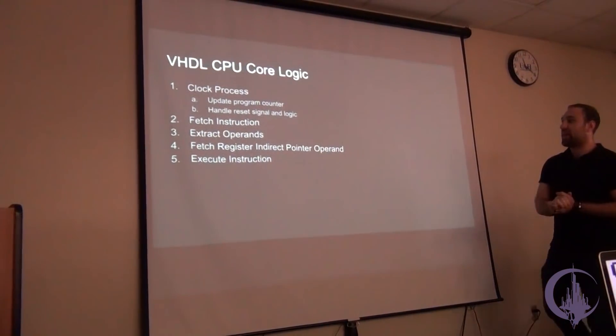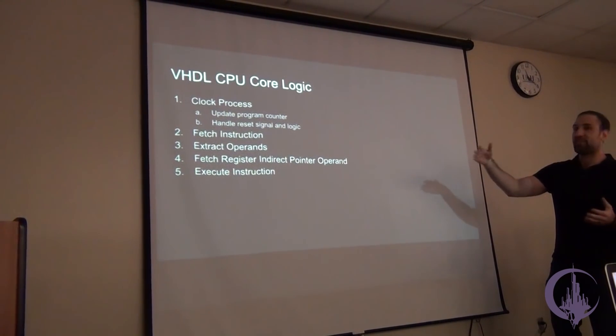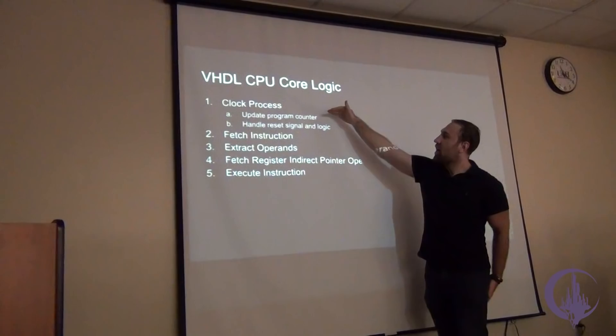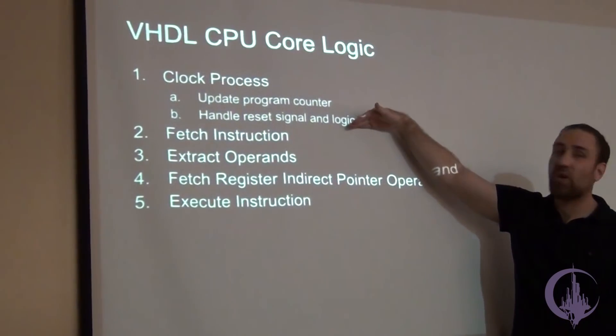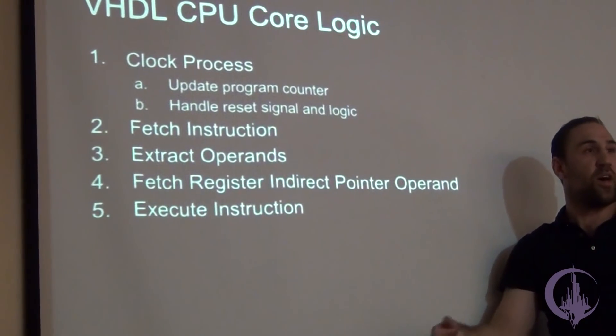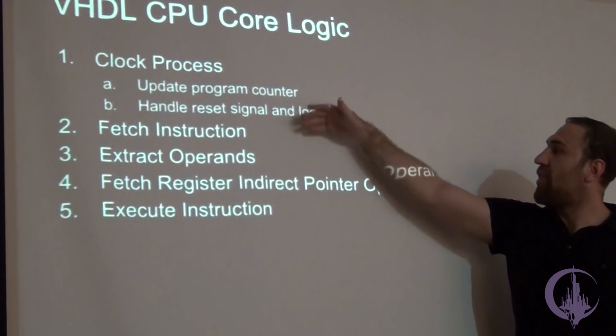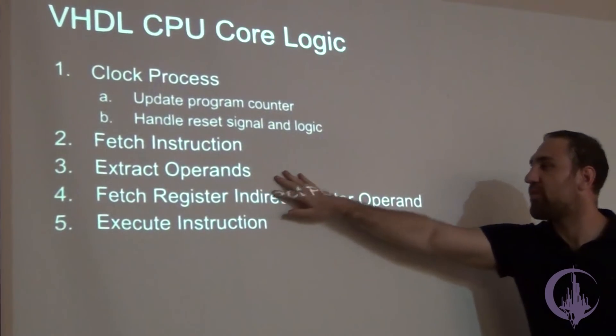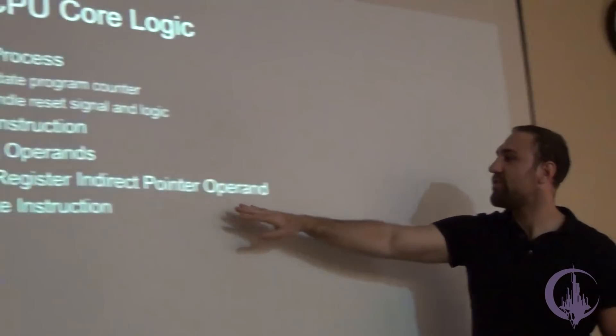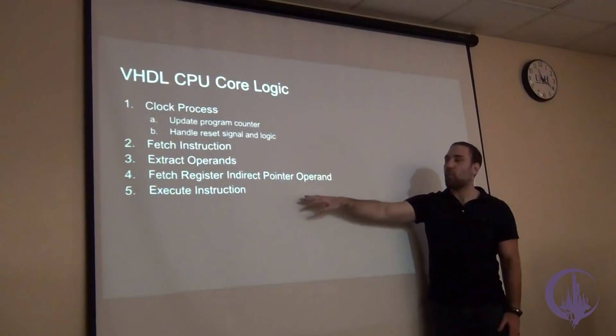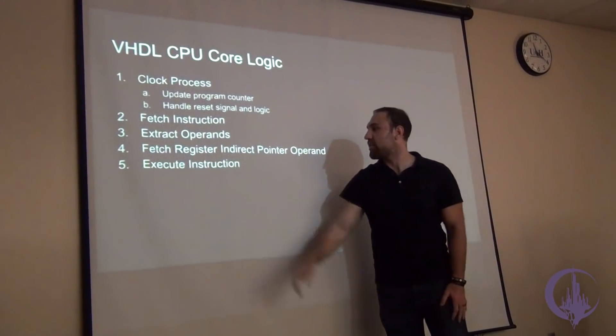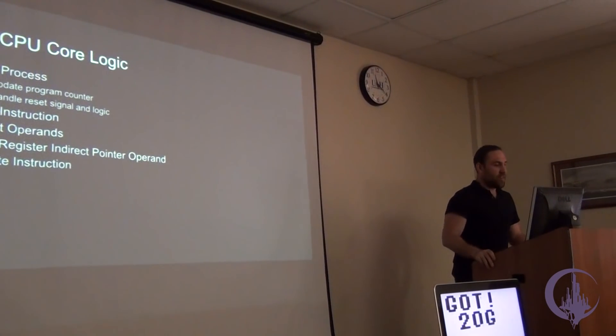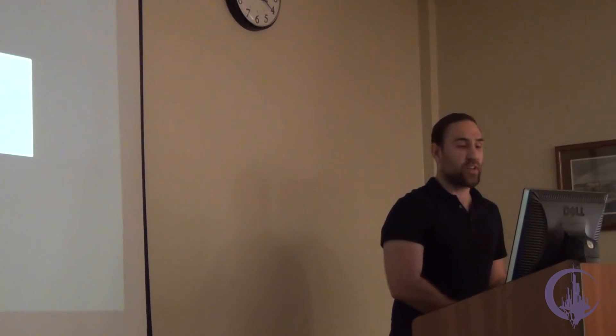The CPU core logic is basically a cascaded process that happens in this order. So first there's a clock process which updates the program counter or checks if there's a reset signal and then initializes all the special function registers and the program counter and all that. And then once the PC changes, that triggers a fetch of instruction. Once the instruction or opcode changes, that triggers the extraction of operands. And then once the operands changes, there's a special step I'll get into which is for the memory indirect mode that fetches that pointer. And then once that's done, it triggers the actual instruction execution. So it's not necessarily like a traditional model like you've learned in architecture class where it's a five-stage pipeline. This is not a pipeline processor. But that is how it was easiest to break the logic up from a behavioral standpoint.